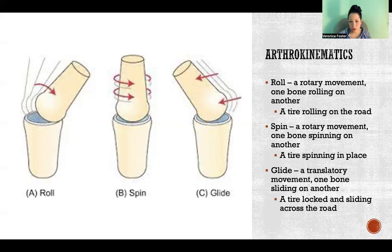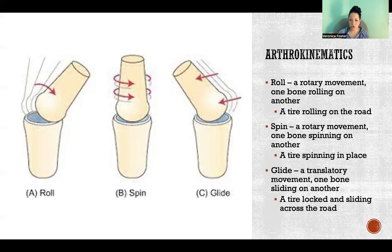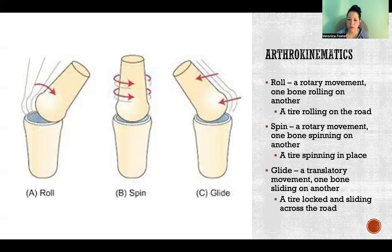The arthrokinematics are what is happening inside the joint between the two bones at their articulating surfaces. With arthrokinematics, we have three possible movements: roll, spin, and glide. Roll is a rotary movement — it's where we have one bone rolling on another. A practical example is a tire that's part of a car just rolling on the road, like you would imagine a ball rolling or a tire rolling. It's the roll of one bone relative to the other inside of that joint.